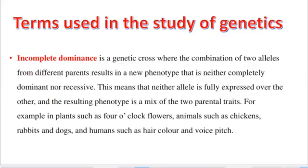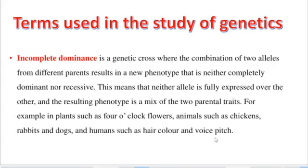Incomplete dominance is a genetic cross where the combination of two alleles from different parents results in a new phenotype that is neither completely dominant nor recessive — neither allele is fully expressed over the other, and the resulting phenotype is a mix of the two parental traits. Examples include plants such as four o'clock flowers, animals such as chickens, rabbits, and dogs, and humans such as hair color and voice. Incomplete dominance can also be defined as the dilution of the dominant allele with respect to the recessive allele, resulting in a new heterozygous phenotype.